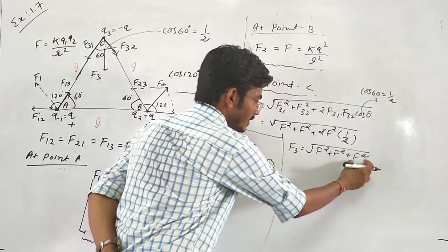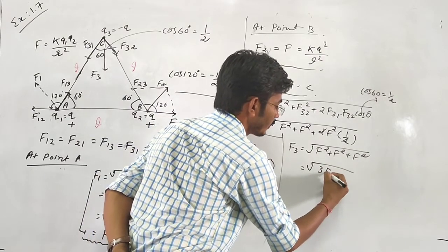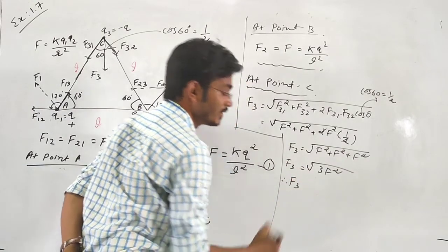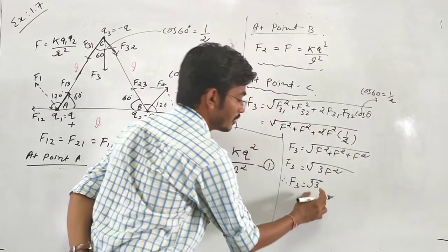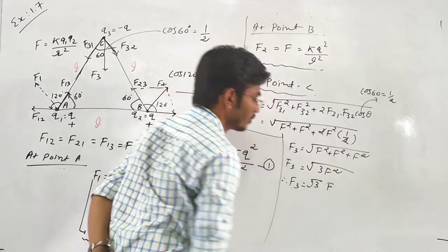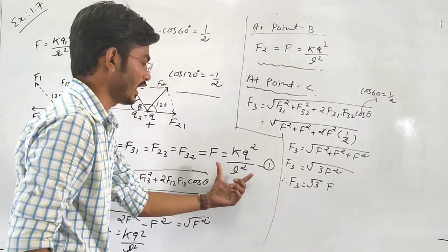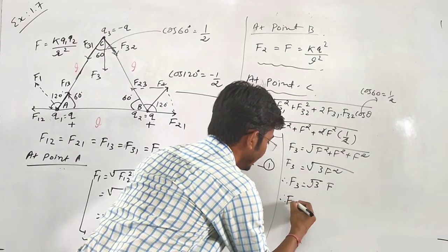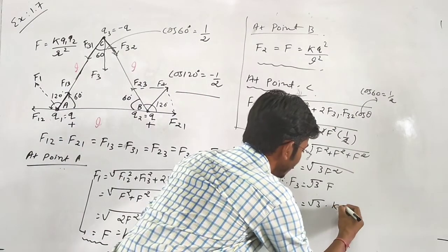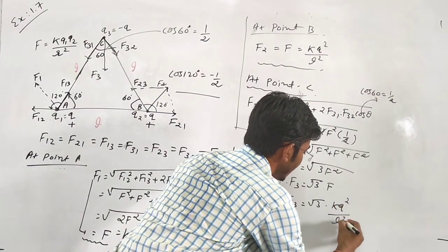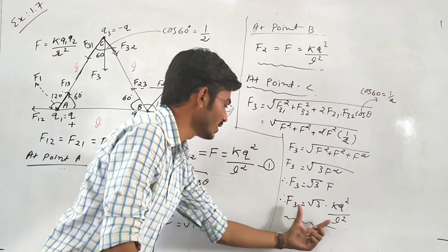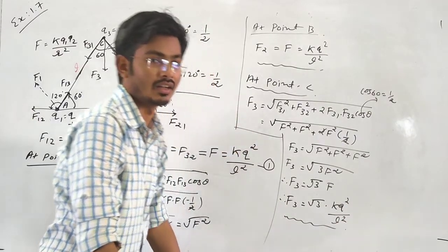This simplifies to the square root of 3F squared, so F3 equals root 3 times F. Using equation number 1, F3 equals root 3 times k Q squared divided by L squared. This is the resultant force at point C.